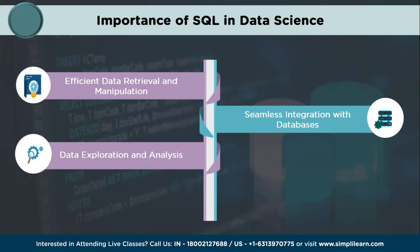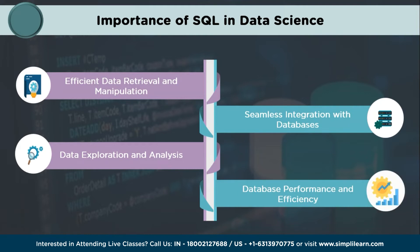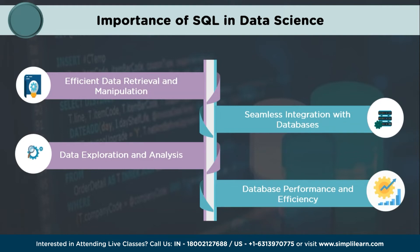SQL acts as a bridge between data stored in databases and the analytical tools and algorithms used in data science. Next, SQL provides powerful capabilities for data exploration and analysis. Data scientists can use SQL queries to investigate relationships between different variables, identify patterns, summarize data, calculate statistical measures, and create derived tables. With SQL, data scientists can perform any kind of analysis, generate summary statistics, and gain insights into underlying data structures, which is crucial before applying more advanced analytical techniques. Finally, SQL is designed to optimize data retrieval and manipulation. Relational databases handle large volumes of structured data efficiently, and data scientists can leverage indexing and query optimization capabilities to improve the performance of their data operations.